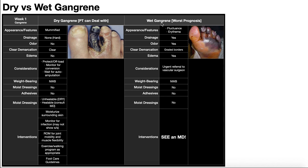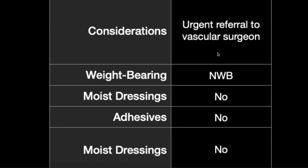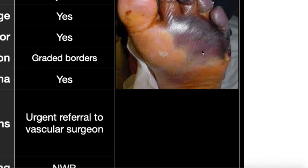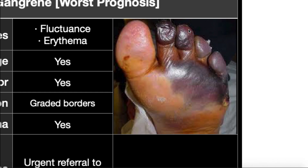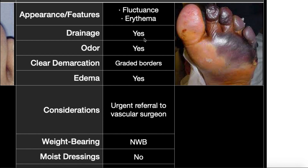Let's assume our dry gangrene has progressed to wet gangrene — the worst prognosis. The tissue is still going to be very black in color, but now you're going to have fluctuance and erythema. You can see some redness on the bottom of the foot — that would be erythema. There will also be drainage, edema, and odor, because this wet gangrene is now infected. The biggest risk is osteomyelitis, where the infection spreads to the bone. When that happens, amputation by a surgeon is essentially inevitable, and you'll probably end up losing more than just this region.